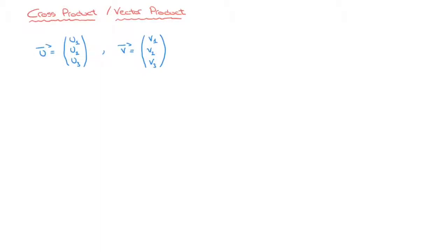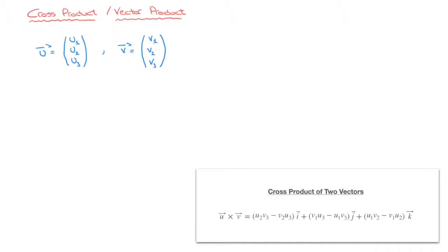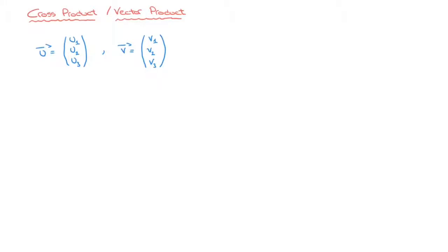The first option is to learn the formula that we see at the bottom of the screen off by heart, which works perfectly well. The second way is to use matrix algebra, in particular the determinant of a 3x3 matrix, which leads to the same result. So long as we learn how to calculate the determinant of a 3x3 matrix, we needn't bother to memorize this formula off by heart. To prove that, let's derive the formula using the two vectors we have here, as well as matrix algebra.